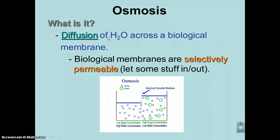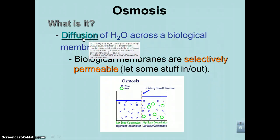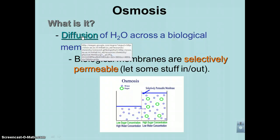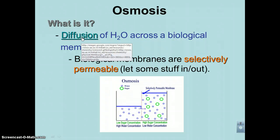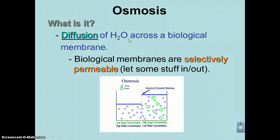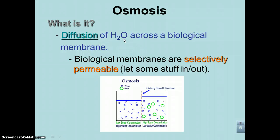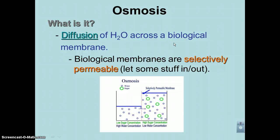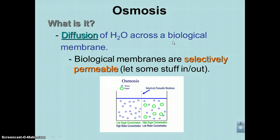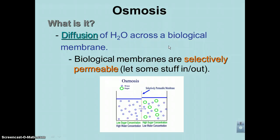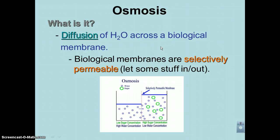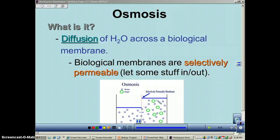What is osmosis? Osmosis is diffusion of water across a biological membrane. When we talk about a biological membrane, we mean the cell membrane, a nuclear envelope, the outer membrane on a mitochondria — anything that's a phospholipid bilayer. Any membrane is selectively permeable.